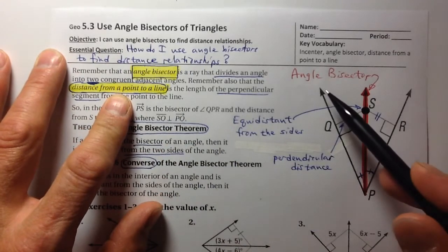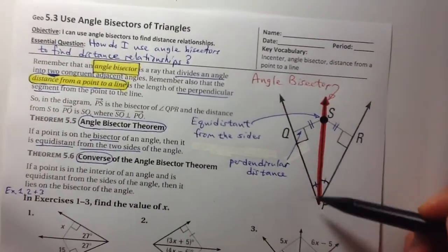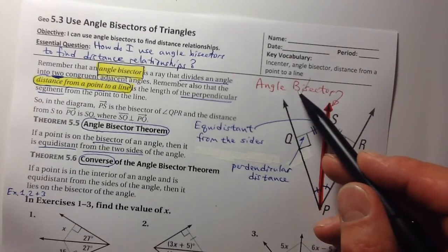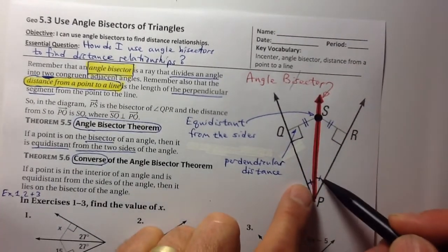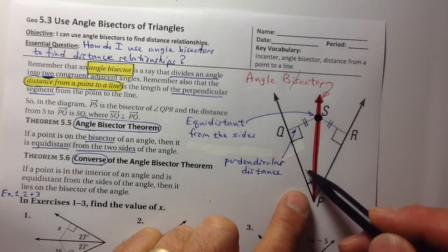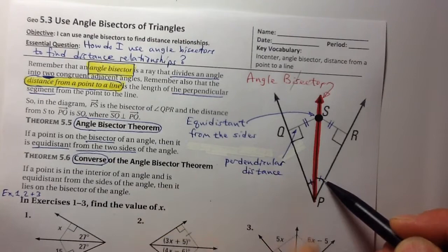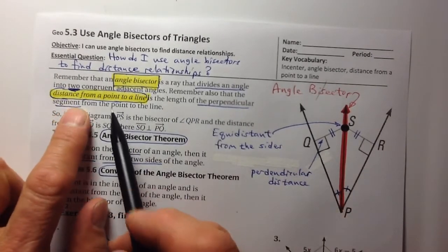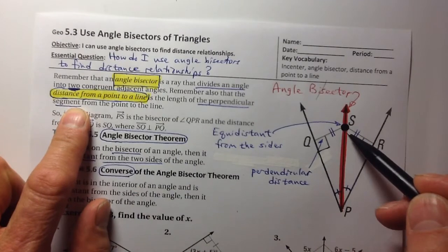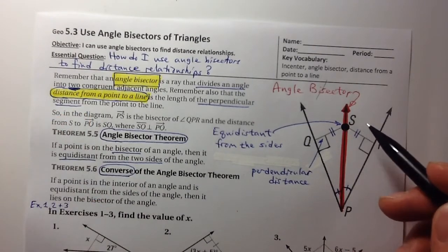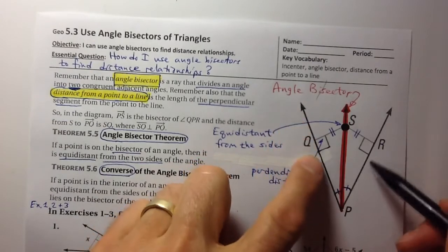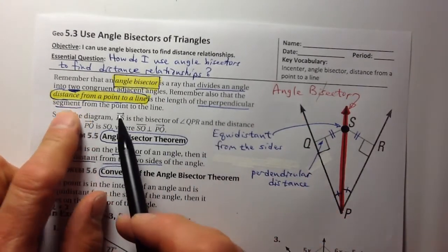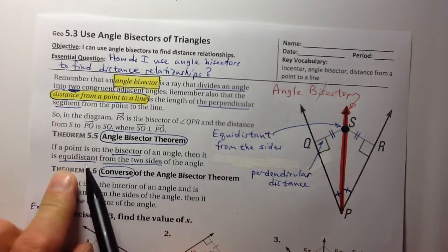So we know what angle bisectors are, right? Here's our larger angle, and this is an angle bisector. It is bisecting, cutting, sectioning the angle into two parts. And so therefore the right angle here and the left angle, these are congruent to each other. But what is unique about this angle bisector is that each point on this angle bisector is equidistant from the sides of that angle.